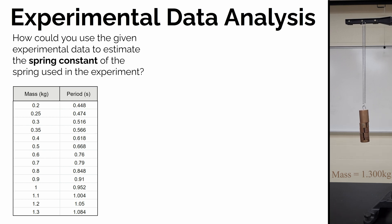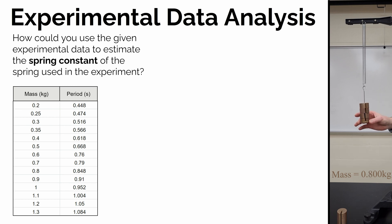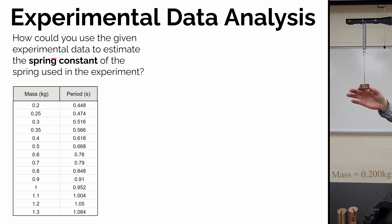So the question might be: how could you use the given experimental data to estimate the spring constant of the spring used in the experiment? Usually with these types of questions, they're going to ask you to make some kind of graph and then use some value from that graph to determine the value they're asking about — in this case, the spring constant.